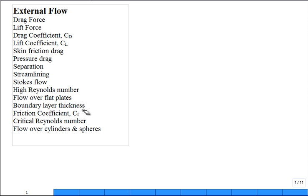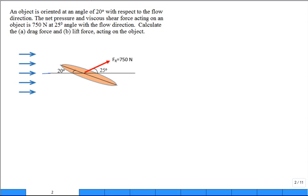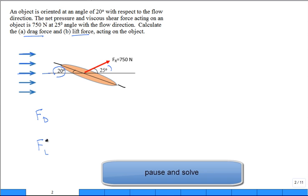So we covered a lot of material and I just want to cover some more material but I'll start with a problem. An object is oriented at 20 degrees, so the axis of the object right here is 20 degrees with respect to the direction of the flow which is coming in in a horizontal direction.